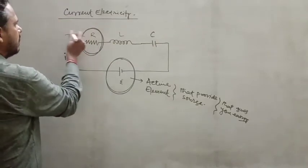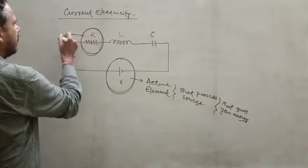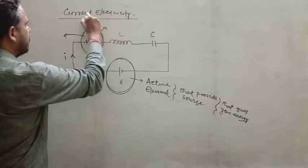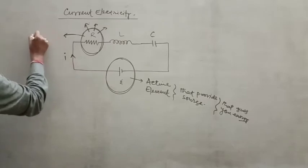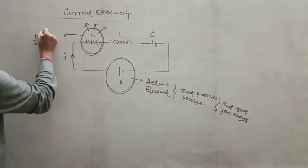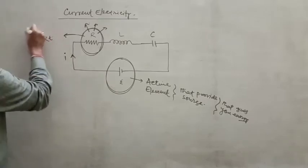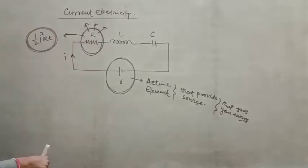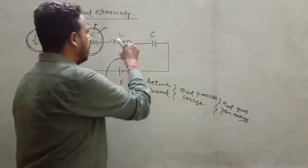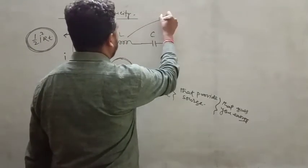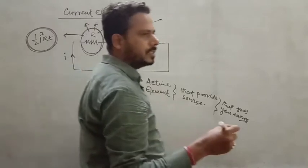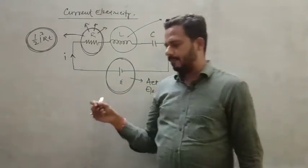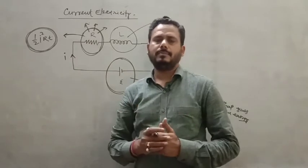When potential difference exists across the resistor, energy is dissipated from it in the form of heat energy. The amount of energy dissipated to the surroundings by this resistor is ½I²Rt.